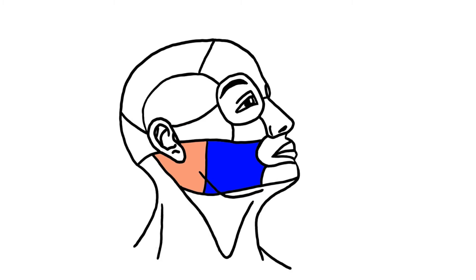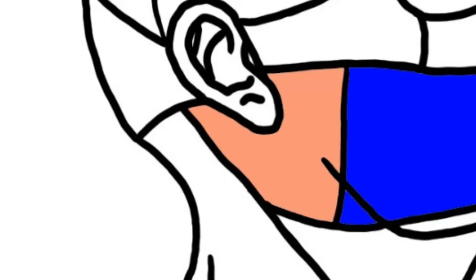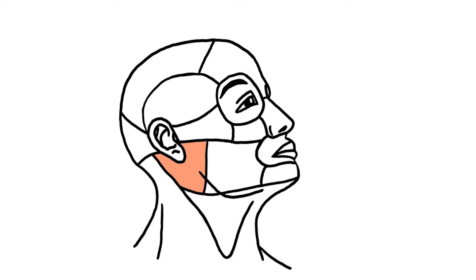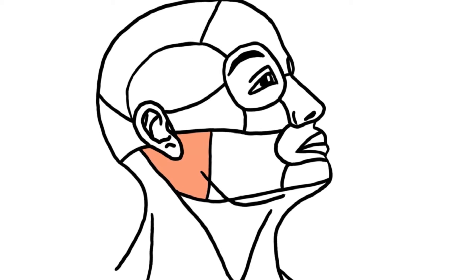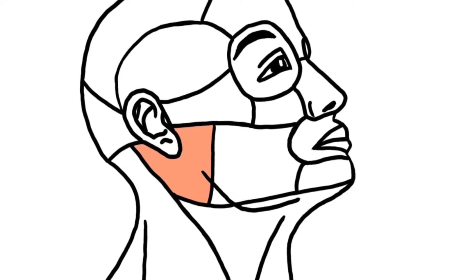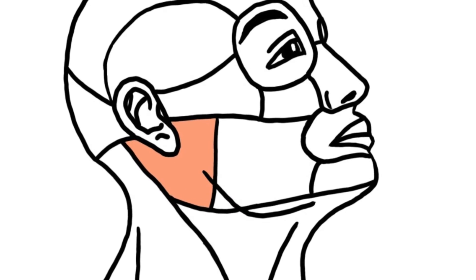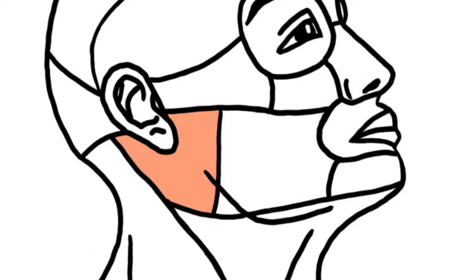Now we will move on to the parotid or parotideo-masseteric region. Superiorly, you'll have the zygomatic arch, or the auricular, occipital, and zygomatic region. And inferiorly, you have the mandibular base or the mandibular angle.